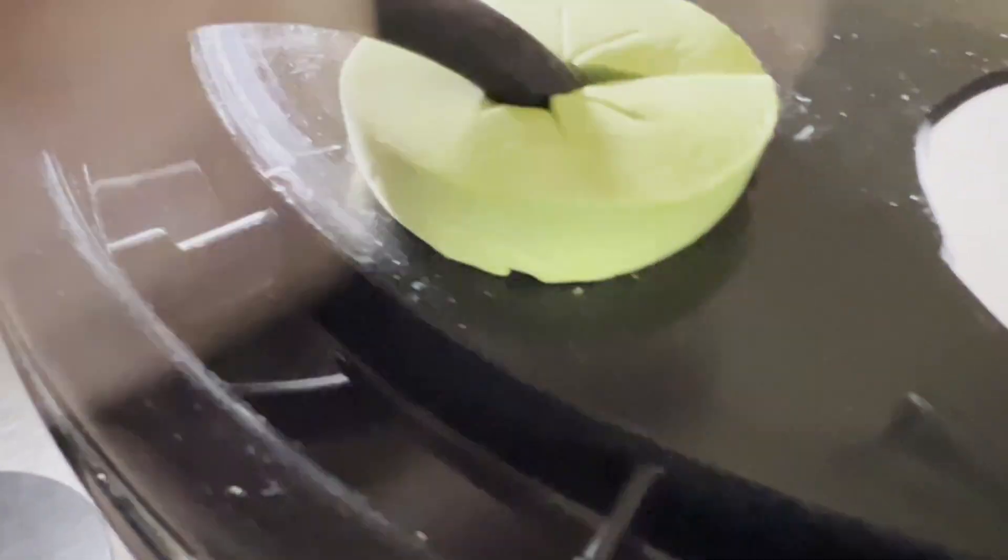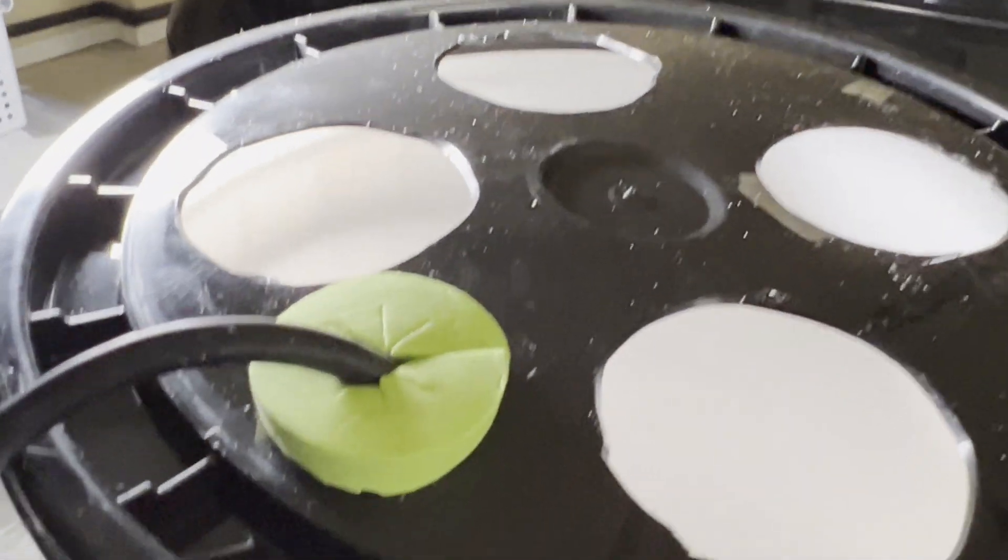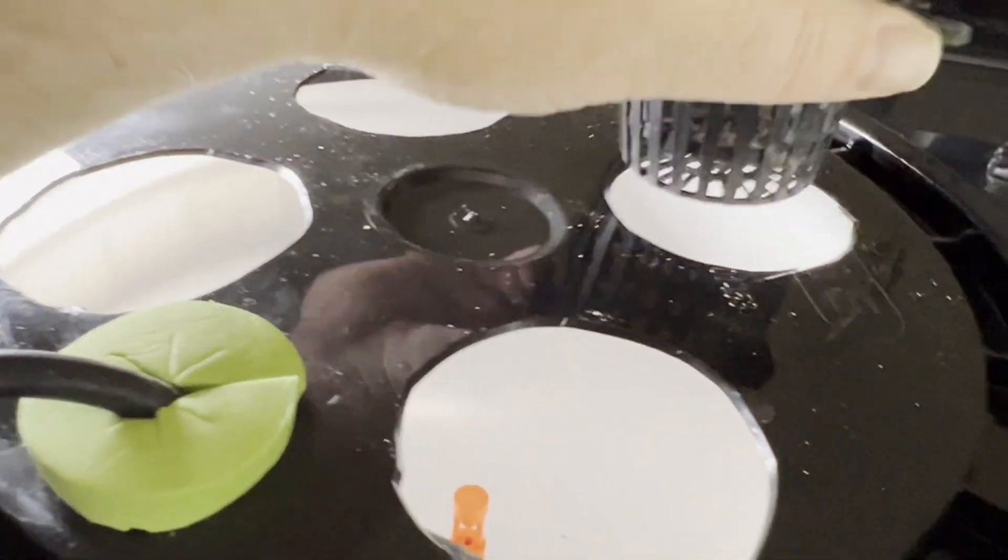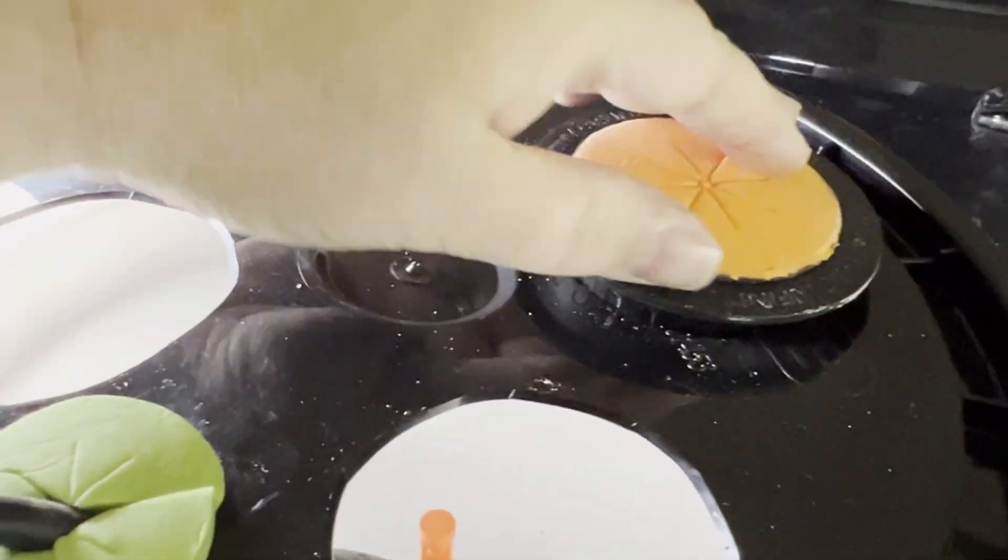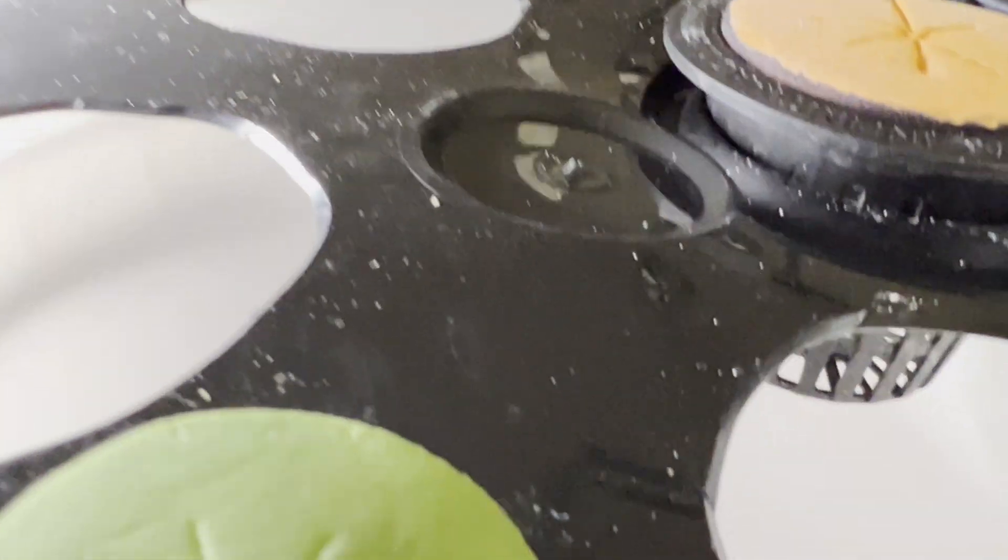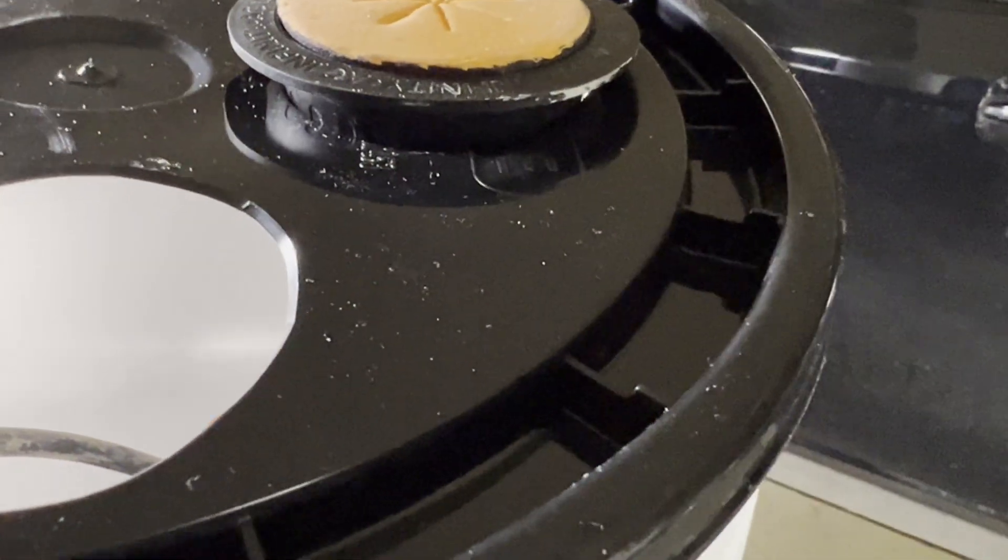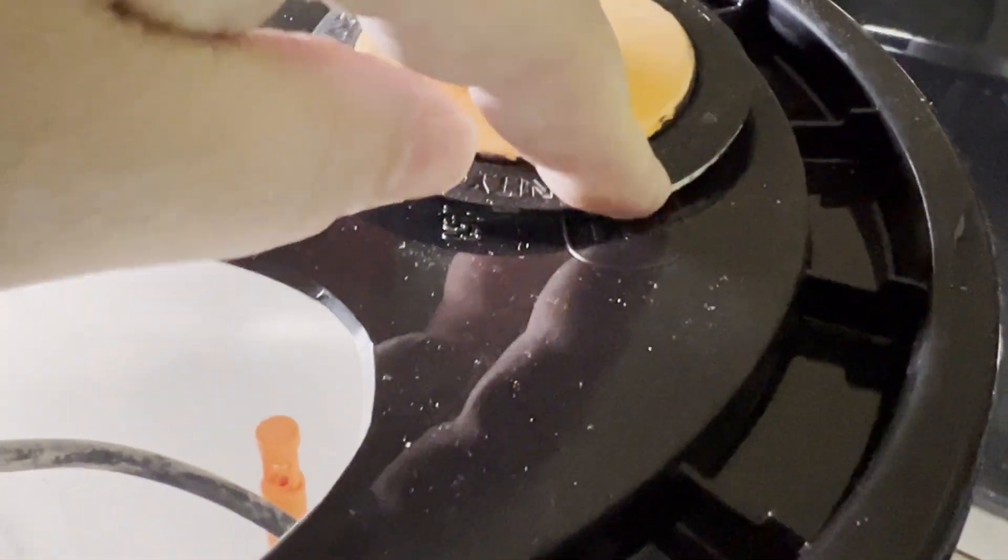Now we add our net pots and these kind of just jam in here like that, and those have a nice tight fit so you don't have to worry about. Make sure that this is in low enough that the water is not going to come out.